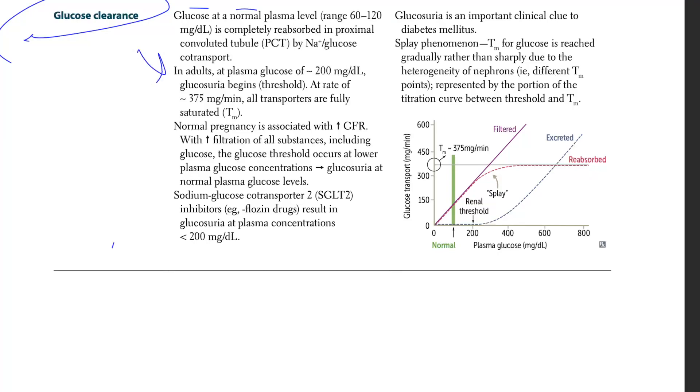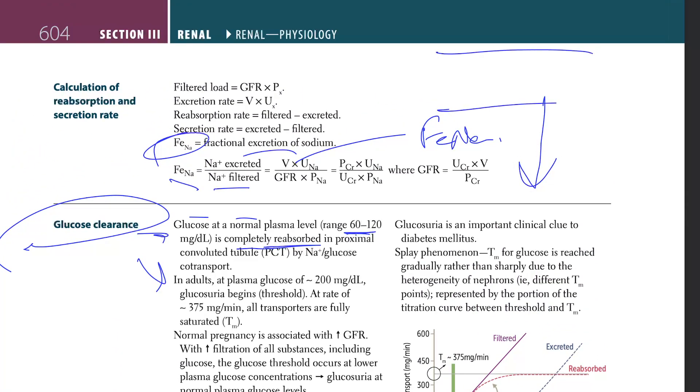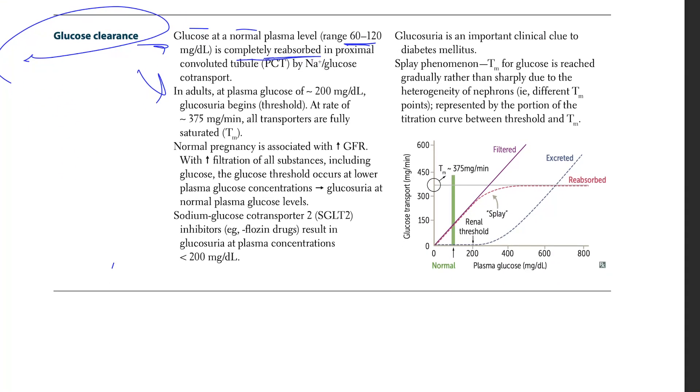So they're saying that if you have 60 to 120 plasma level, you're reabsorbing all that glucose that is going into the urine, getting reabsorbed back. What is reabsorption? Everything from urine in the tubules getting back into the blood. That is called reabsorption. All that glucose, so nothing goes out in urine.